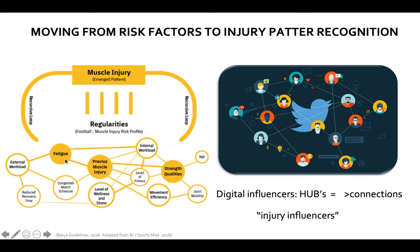Fatigue, previous muscle injury, and strength qualities would be hubs. It's not only the interaction but the strength of the interactions between those factors that matters. It's not only the specific characteristics of factors that make them important, but how many interactions the factor has and the strength of those interactions.